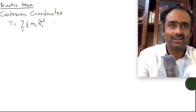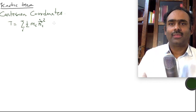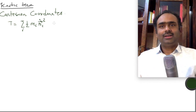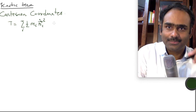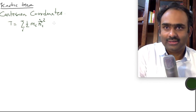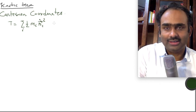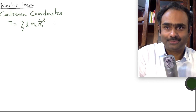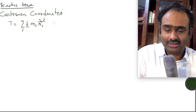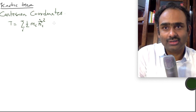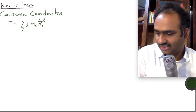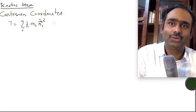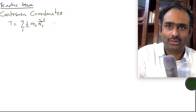T is really diagonal in the velocities. Also note that there is no factor which depends on the coordinate itself. So T does not depend on the coordinate but only on the velocities. There is another thing — also note that there is no linear term. It is all just quadratic.